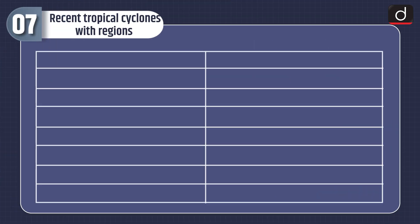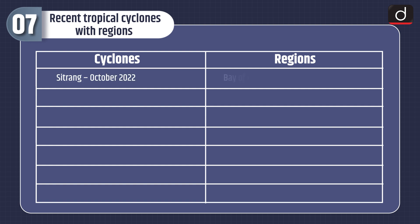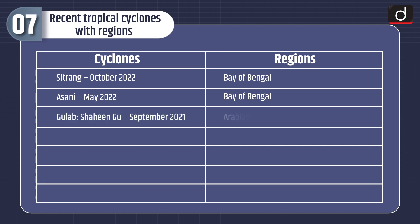Lastly, let's discuss recent tropical cyclones with regions. Sitrang occurred in October 2022 in the Bay of Bengal. Asani occurred in May 2022 in the Bay of Bengal.